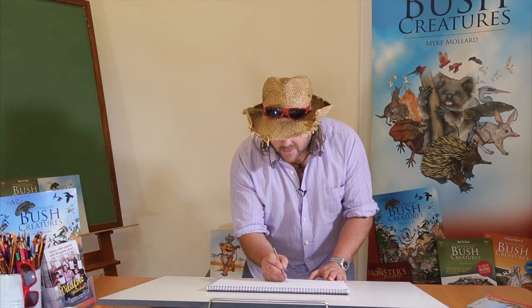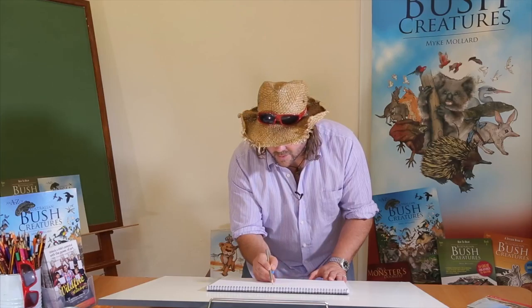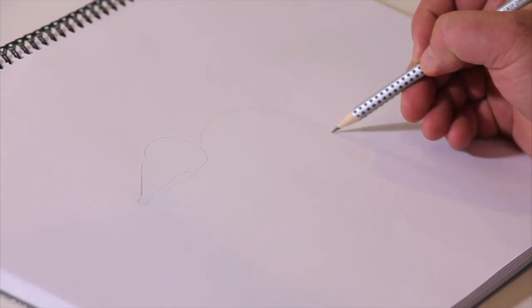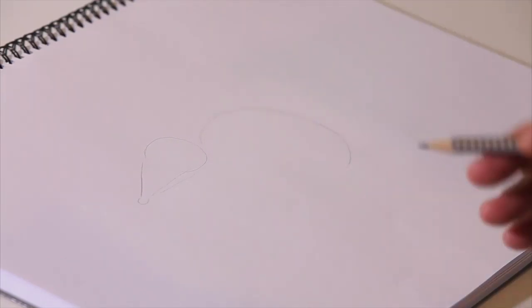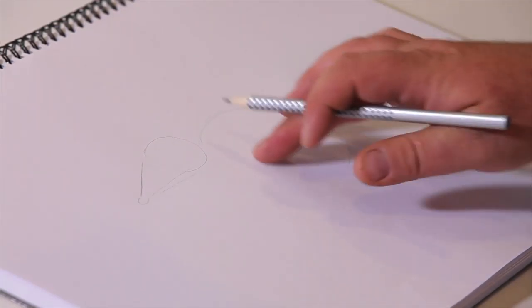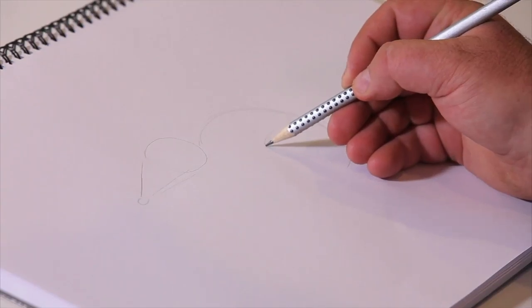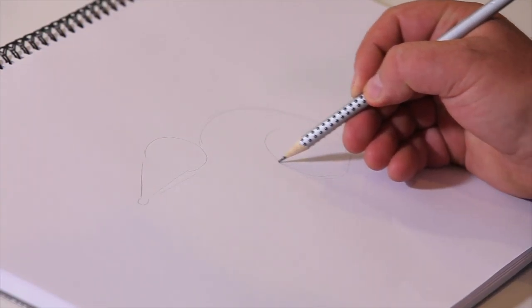Now once we've got his head on, we're going to have to do his body. Now if you noticed when he was grubbing around, he's got a fairly circular body. So if I just did a nice big circle, a big half circle coming around here like this, just nice and softly, I'll get his whole hip in here with another half circle. There you go.